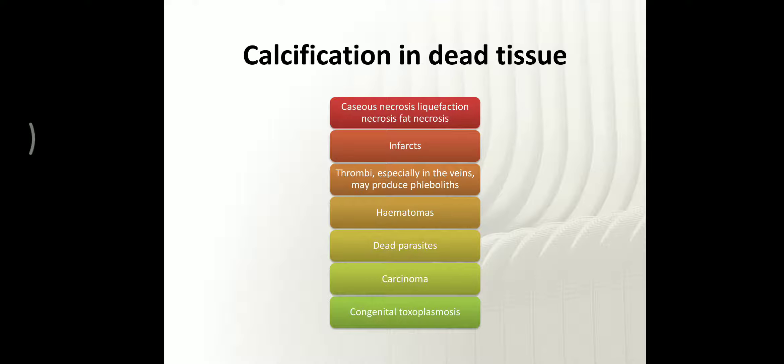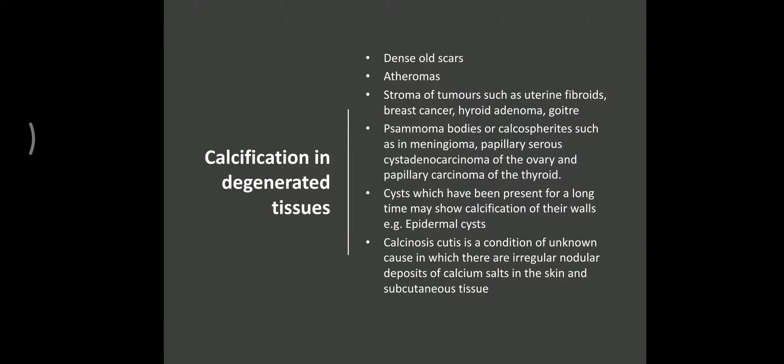Now, the causes of calcification in degenerated cells: when the cell gets degenerated, in the case of an old dense scar, it may undergo hyaline degenerative changes, which further develop into calcification. In the case of atheromas in the coronary artery, after atheroma formation there is deposition of calcium.